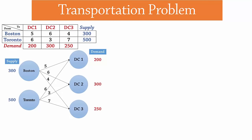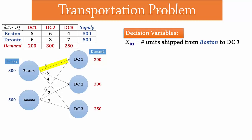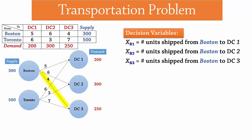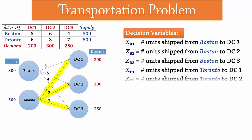Now, let's define the decision variables for this LP model. Let XB1 equal the number of units shipped from Boston to DC1, then XB2 from Boston to DC2, and XB3 to DC3. Similarly for Toronto, we can use XT1, XT2, and XT3.